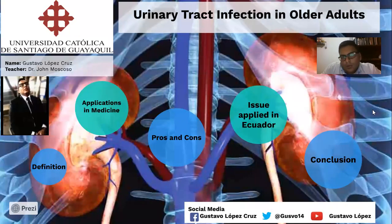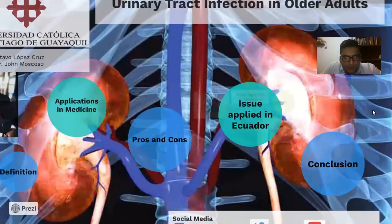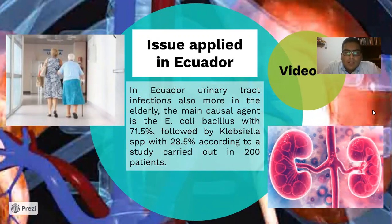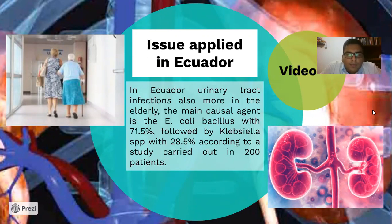Issue applied in Ecuador: in Ecuador, urinary tract infections are also more common in the elderly. The main causal agent is the E. coli bacillus with 71.5%, followed by Klebsiella spp. with 28.5%, according to a study period in 200 patients.